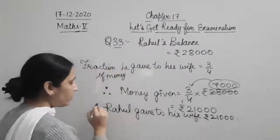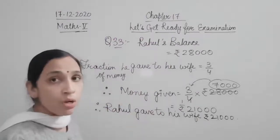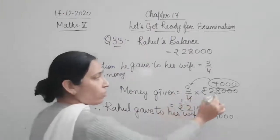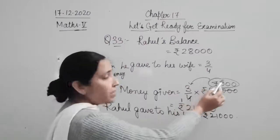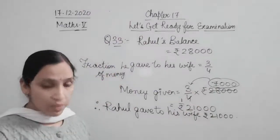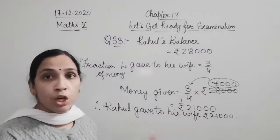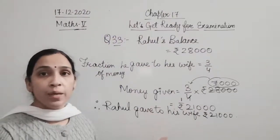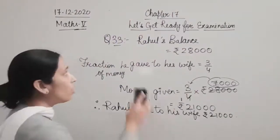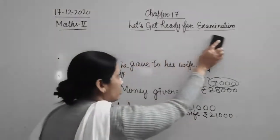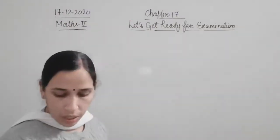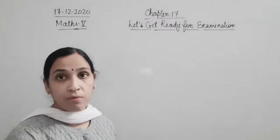You can write 'therefore' here only — you don't need to write it again. Money given is 3/4 of rupees 28,000, which equals rupees 21,000. So Rahul gave his wife rupees 21,000. This is one example of a word problem on fractions, which you have already learned in the fractions chapter. Now we will do question number 34 from your book.